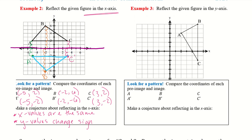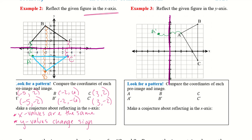Example three — we want to reflect the given figure over the Y-axis, so we are now looking at this Y-axis here. I want to know how far away A is and go that same distance the other direction, giving A prime. For B, I count five units to the axis and five units back the other way, so B prime goes there. For C, same process — count five units each way to get C prime. I can now create my triangle.